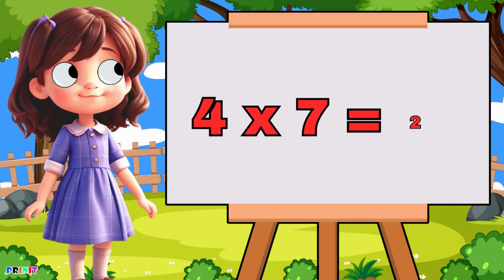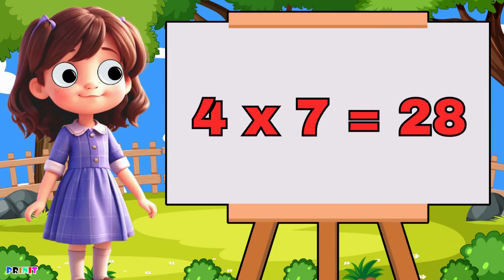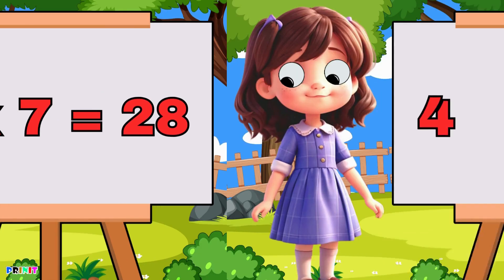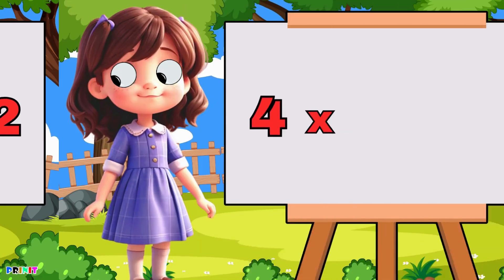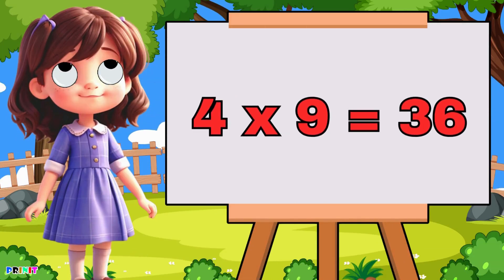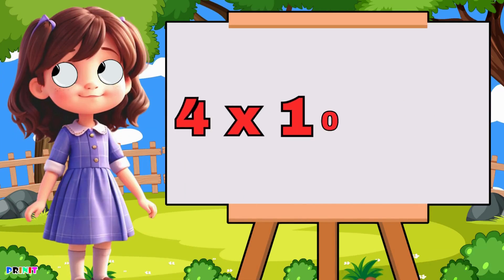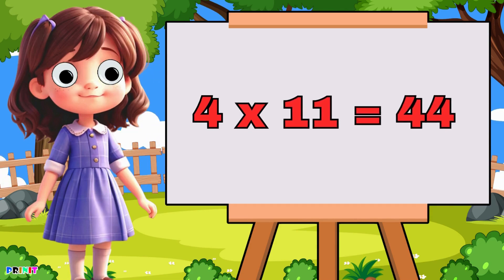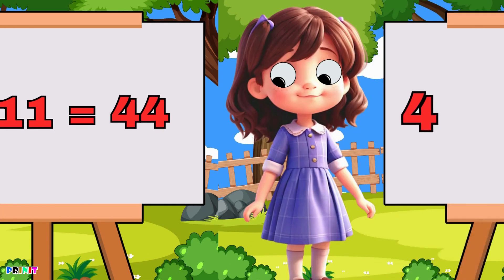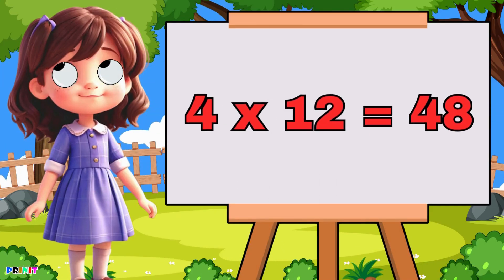Four seven's are twenty-eight, four eight's are thirty-eight, four nine's are thirty-six, four ten's are forty, four eleven's are forty-four, four twelfth are forty-eight.